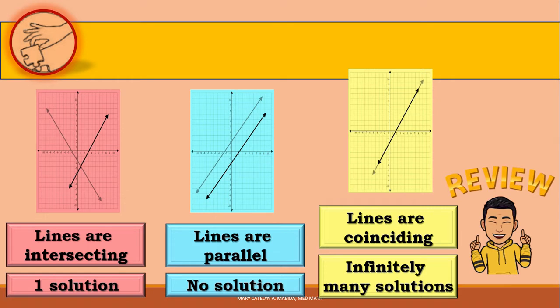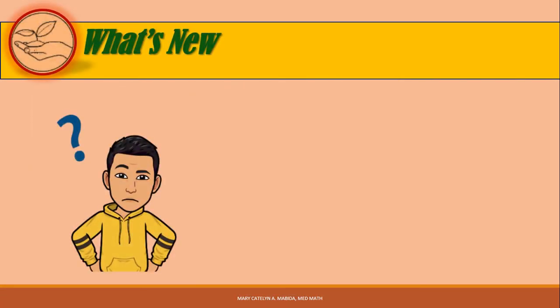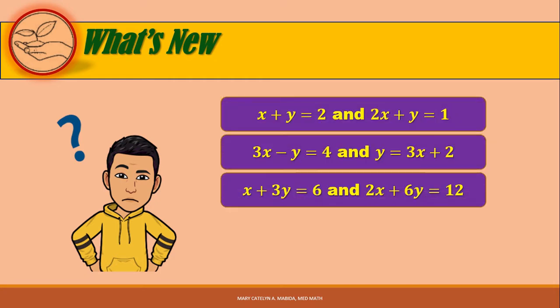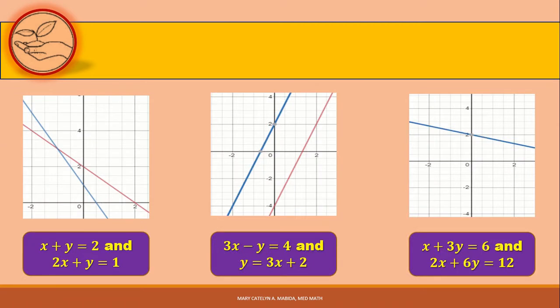These characteristics of the system of linear equations can also be used to categorize them according to their kind. I have here three systems of linear equations. Just by looking at the systems of linear equations does not let us determine the number of solutions right away. Solving and graphing does. But in this lesson, we are going to focus on the graphs of the systems of linear equations. Look at the graph of each system — the graphs will tell us what the solutions of each system are.